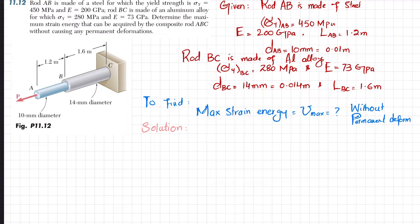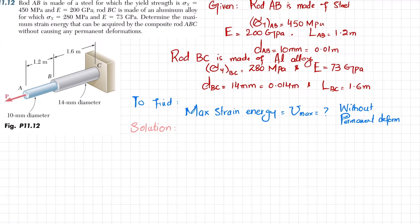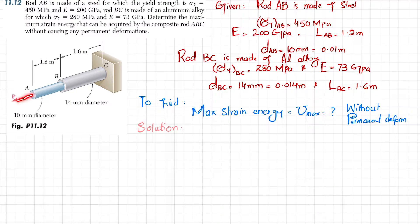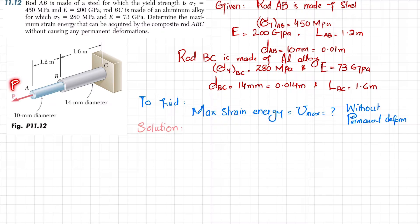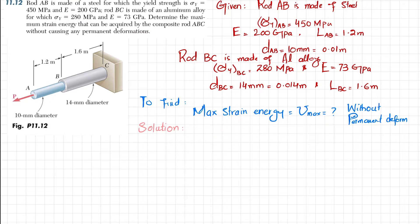At point A, a load P is applied. We will first find this load. Since we have been given the allowable yield strength for steel as well as for aluminum, we will first find the safer load P that can be applied without permanent deformation. Let's start with the solution — first we will find the area of each rod.